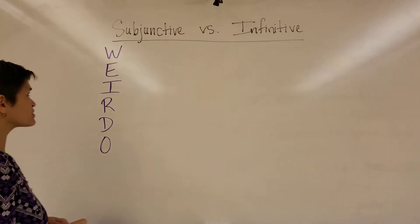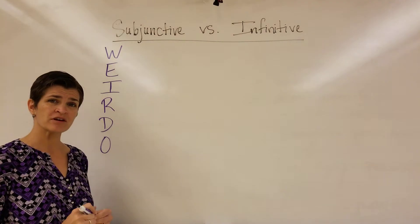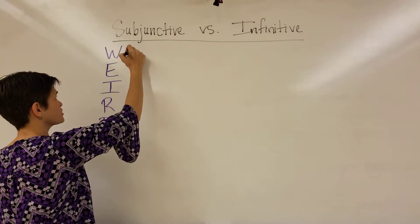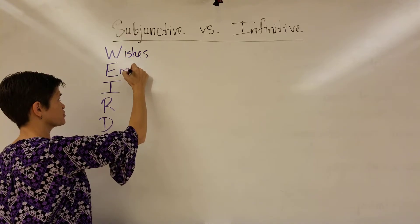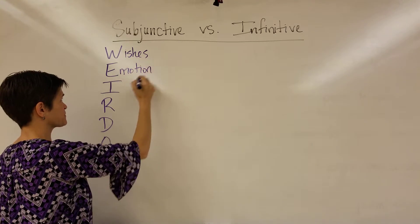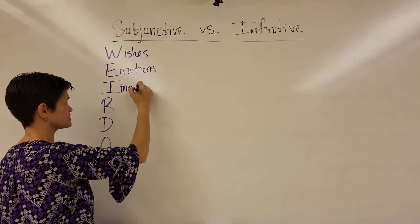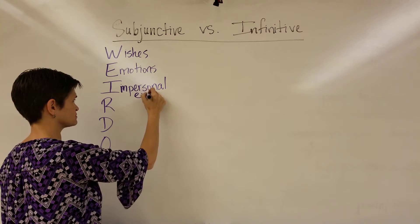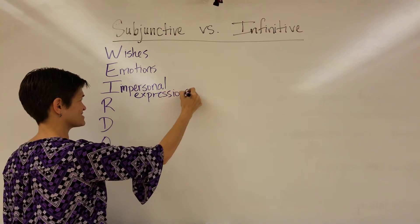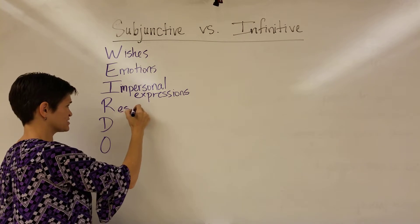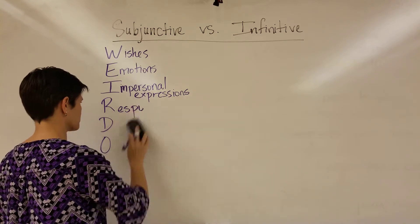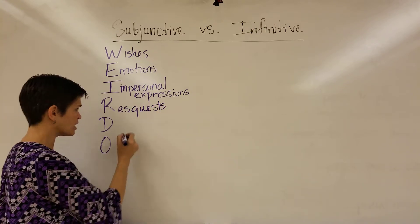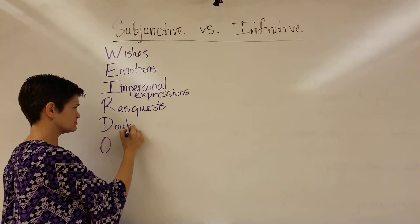In chapter 4a of Spanish 3, we took another look at the subjunctive. We looked at all the reasons why we use the subjunctive — we use it for wishes, for emotions, impersonal expressions like 'it's important that,' requests like 'I hope that,' doubt, or denial.